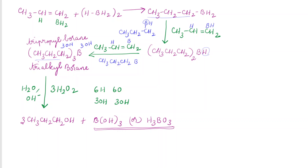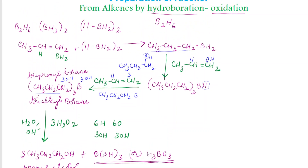Since it is a propyl part, we get propyl alcohol, also called 1-propanol. This is the hydroboration oxidation reaction, and it is a very important question for the CBSE board exam. They will ask: write the hydroboration oxidation reaction, or complete the reaction, or how will you convert propene to propyl alcohol or 1-propanol.